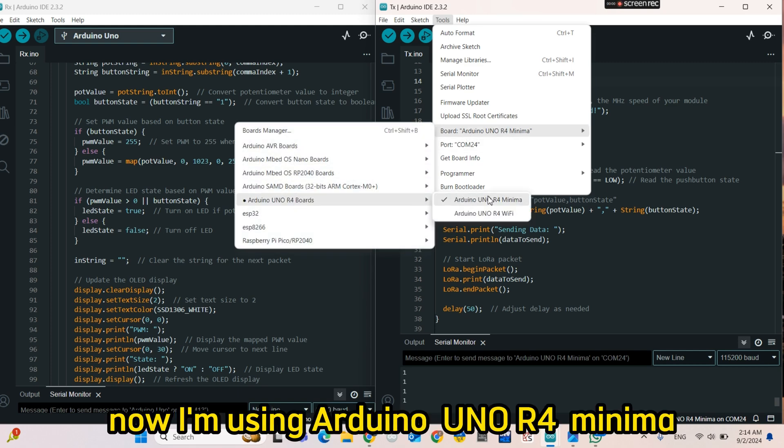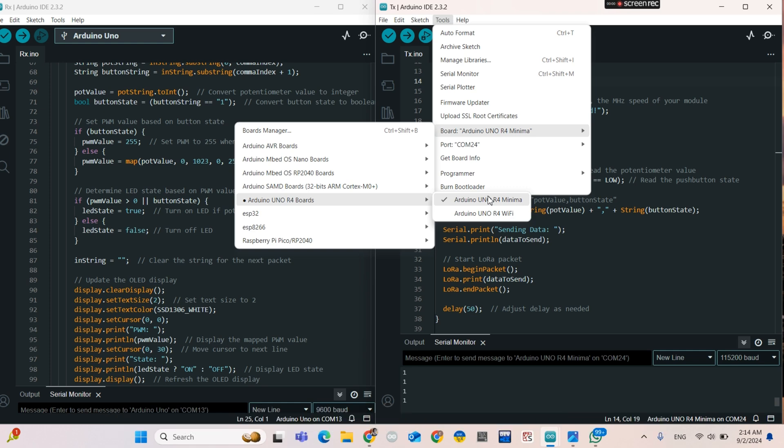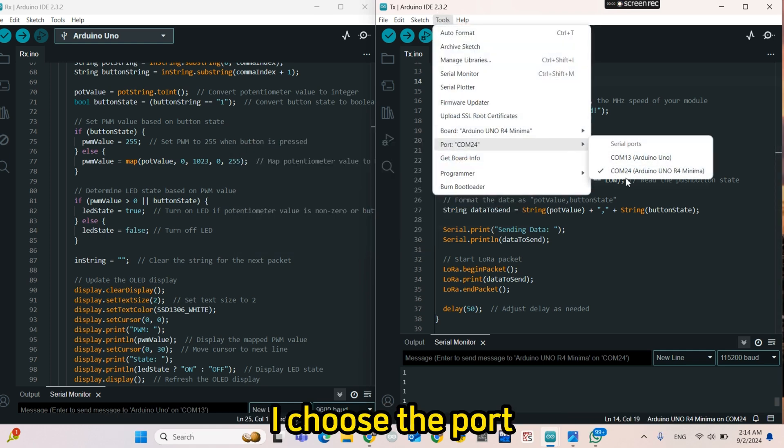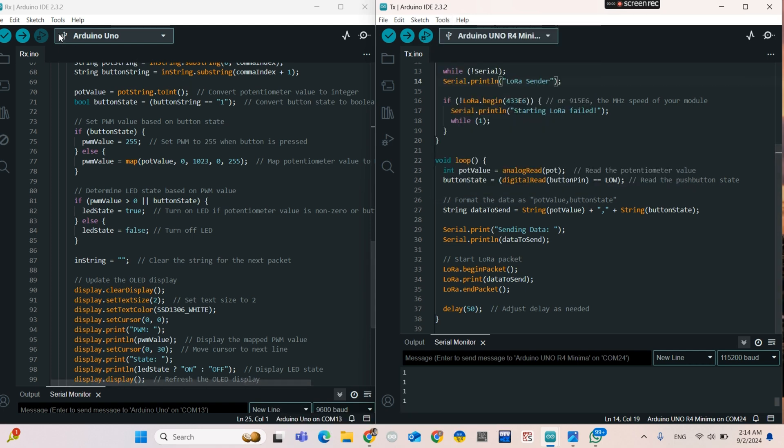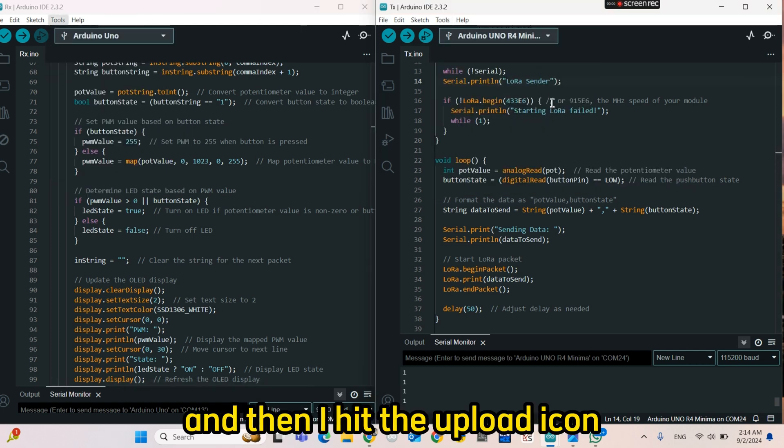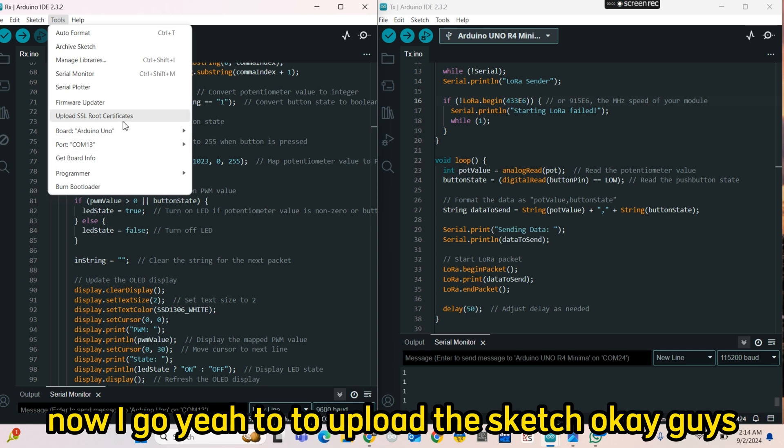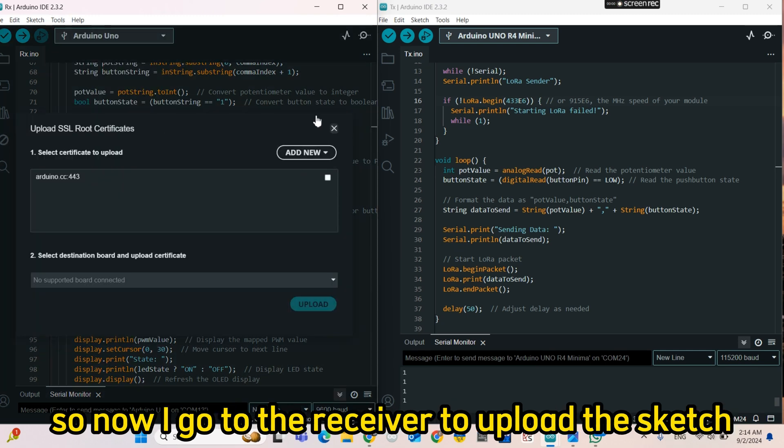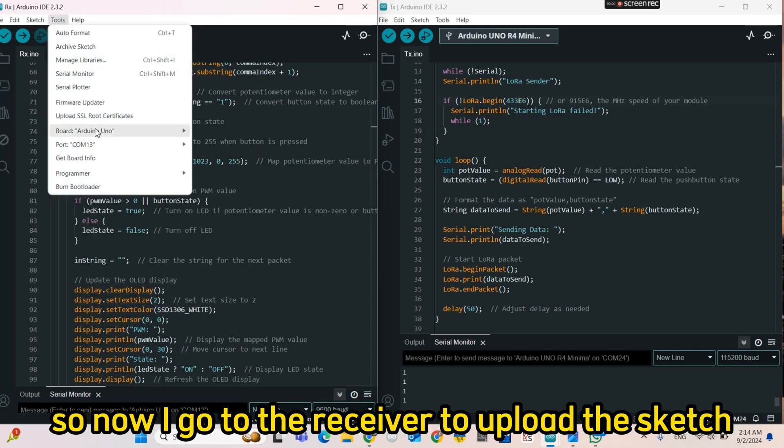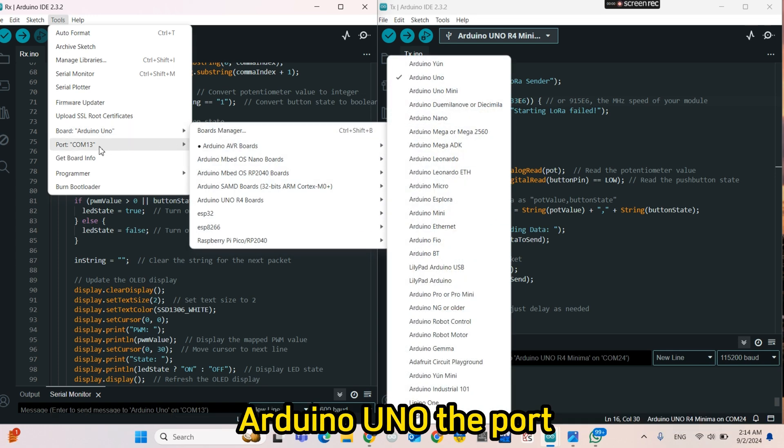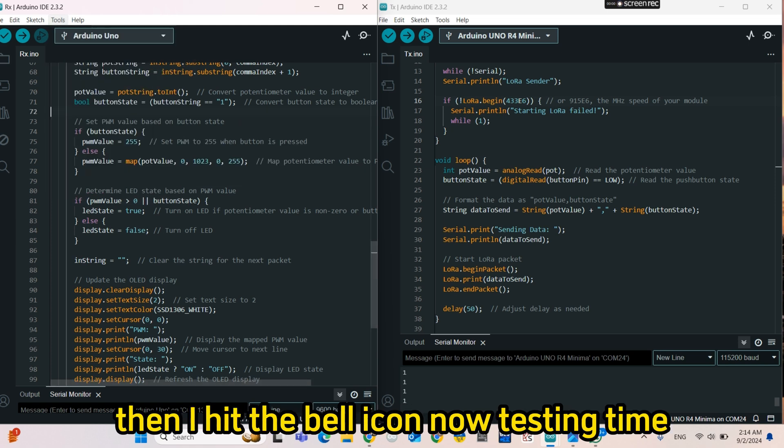Now I'm using Arduino Uno R4 Minima. I choose the port and then I hit the bell icon. Now I go to upload the sketch. So now I go to the receiver to upload the sketch. Arduino Uno, the port, then I hit the bell icon. Now, testing time.